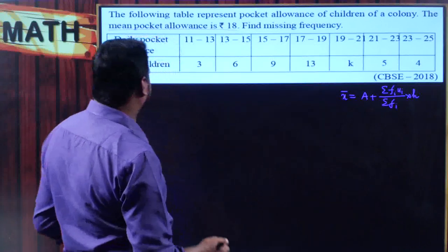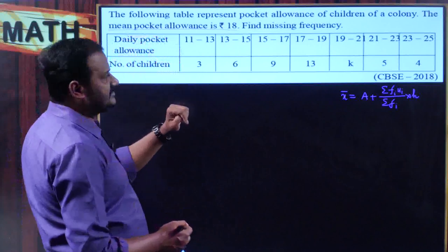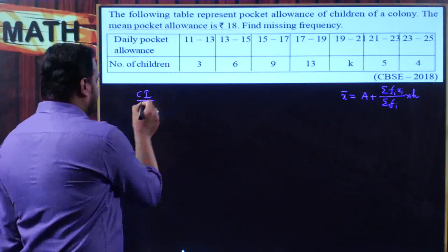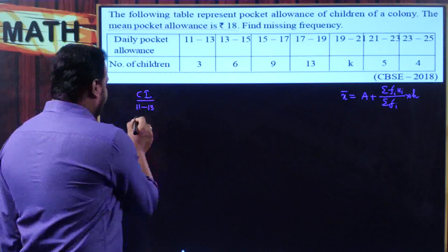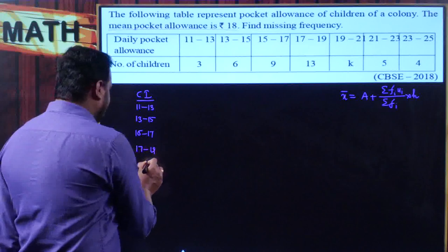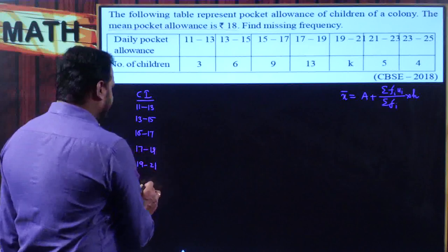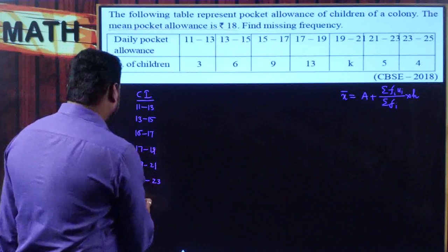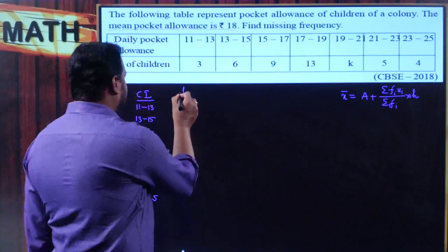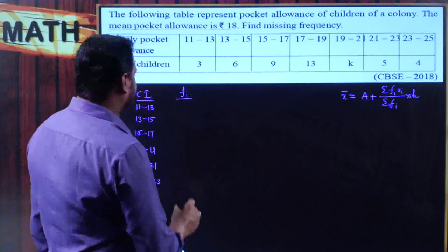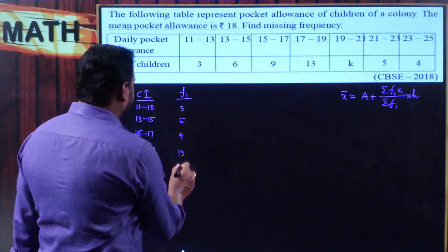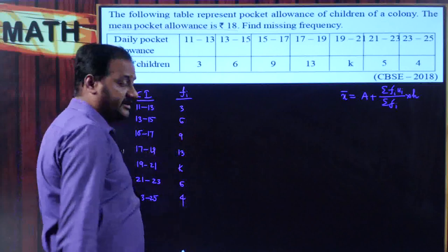The information given: I am writing them vertically. First column is daily pocket allowances — the class intervals are 11–13, 13–15, 15–17, 17–19, 19–21, 21–23, and 23–25. The corresponding frequencies are 3, 6, 9, 13, k, 5, 4.